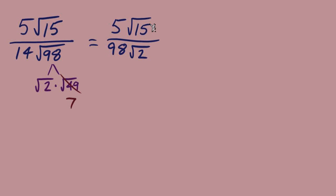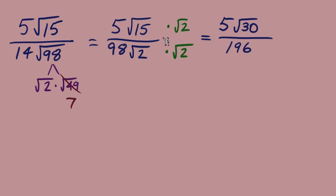We've thought about both types of simplifying first, and there's nothing more to do in that regard. Now we rationalize the denominator to finish up — we don't want to end a problem with a radical in the denominator. To rationalize when there's just one term below, we find the radical and multiply by another radical 2 on top and bottom. In the numerator, radical 2 times radical 15 gives radical 30, and the 5 stays outside.